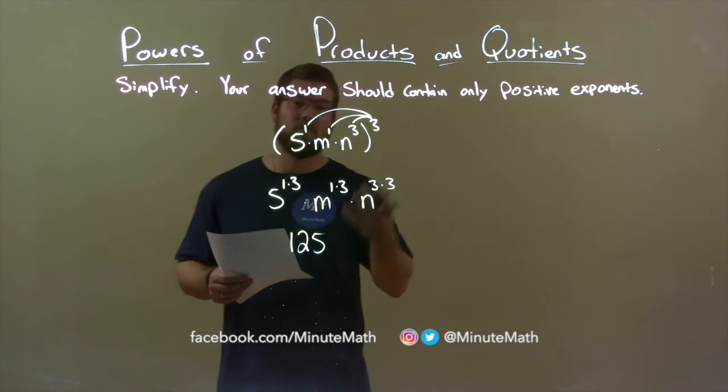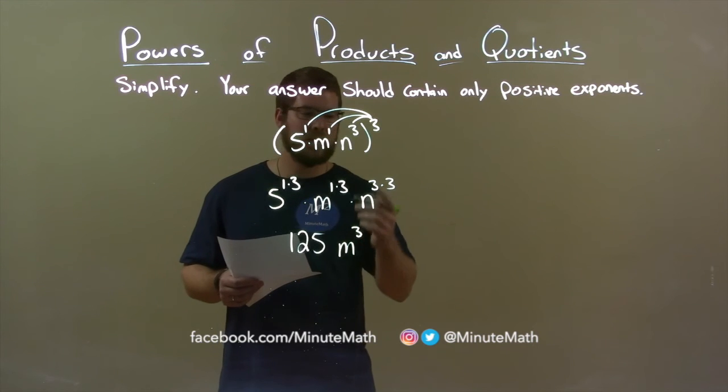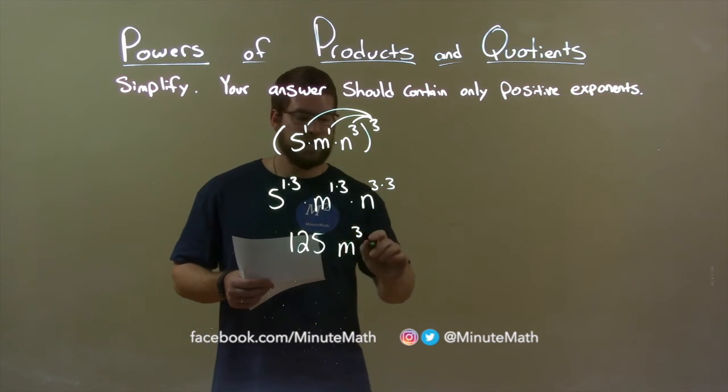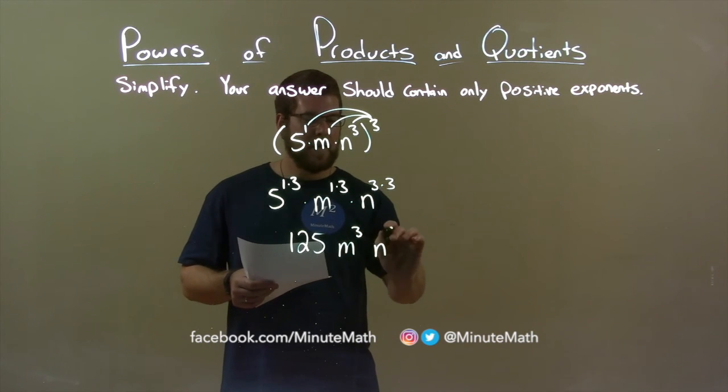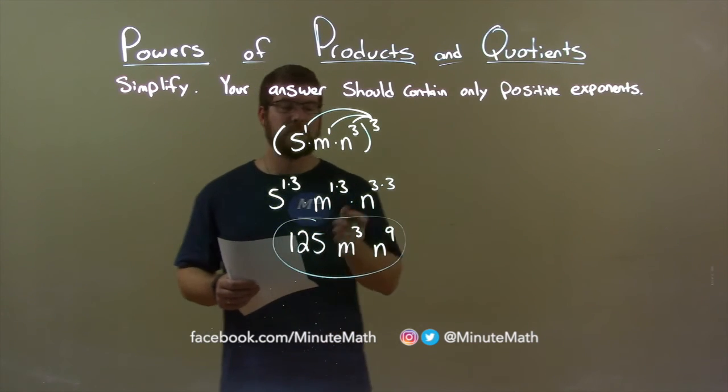1 times 3 is also 3 again, and so we have m to the third power, and lastly, 3 times 3 is 9, so we have n to the ninth power, giving us our final answer of 125 m to the third power, n to the ninth power.